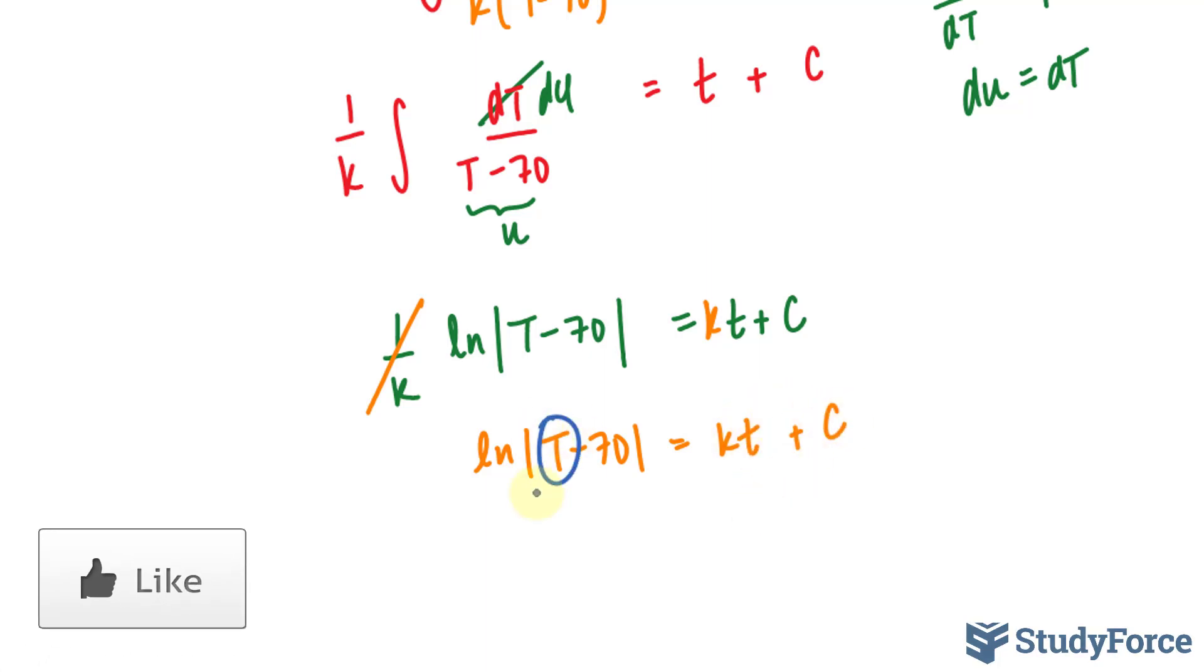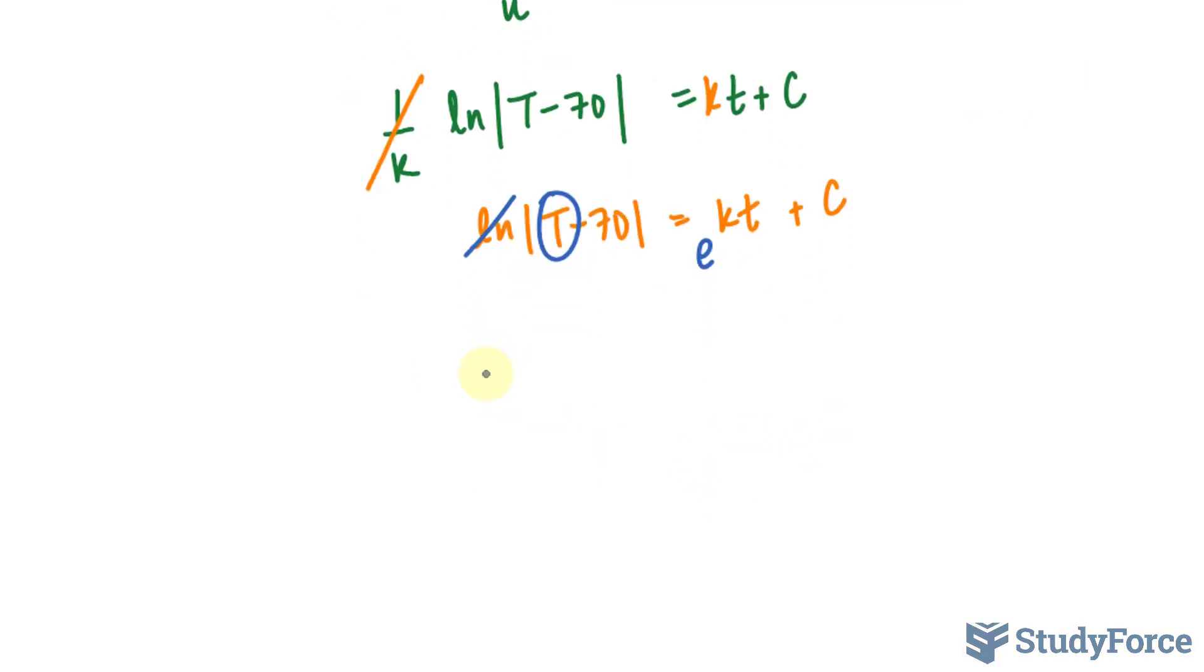I need to solve for this T. So I'll raise both sides to the base of e. And by doing that, this ln goes away, and we have e to the power of kt plus C on the right side. So I have |T - 70| is equal to e^(kt), e^C. I've just used the laws of exponents here to rewrite this in such a way where we have this as a product. Now, I do not want these absolutes. So in place of those absolutes, I'm going to write down plus minus on the right side. So I have T - 70 is equal to the expression that you see on your right. And instead of plus minus and this factor e^C, I'll replace that with a letter. Let's use the letter M. M times e^(kt).